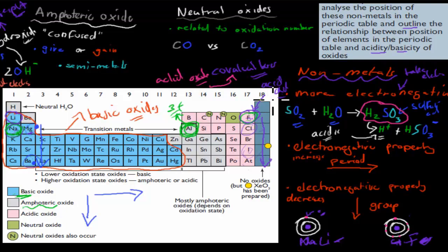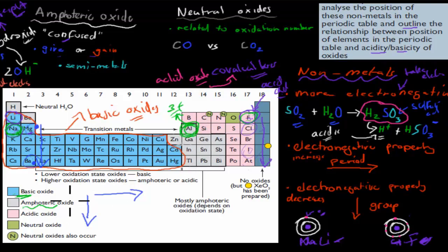Amphoteric oxides are the ones that are a bit confused — they tend to be in the middle of the periodic table, either semi-metals or weaker metals. Zinc is not a semi-metal but is a weaker metal, while aluminium, germanium, and gallium in the middle are examples of amphoteric oxides, because they can either give or take electrons.